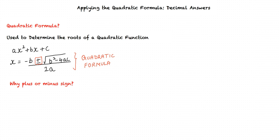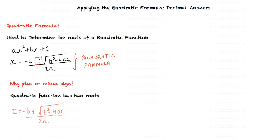Why is there a plus or minus sign? Recall that the quadratic function has two roots, thus there is a plus or minus sign. One root would be x equals negative b plus square root of b squared minus 4ac, whole divided by 2a, and the other root would be x equals negative b minus square root of b squared minus 4ac, divided by 2a.